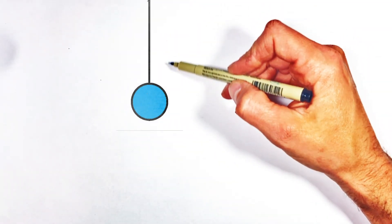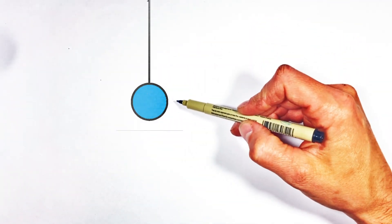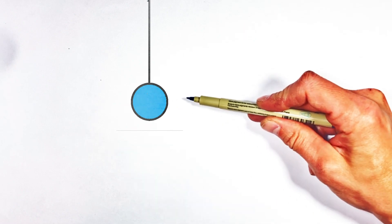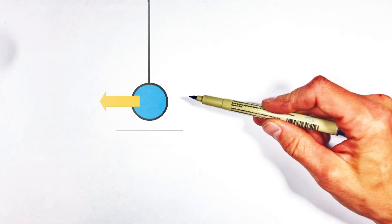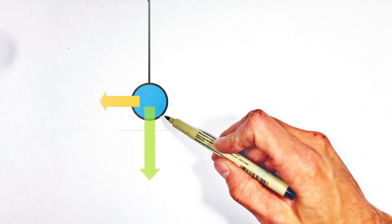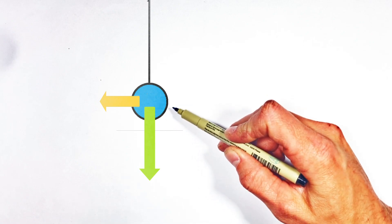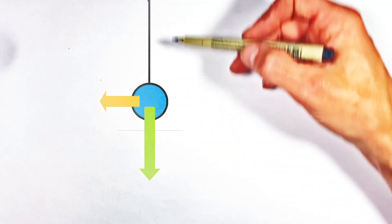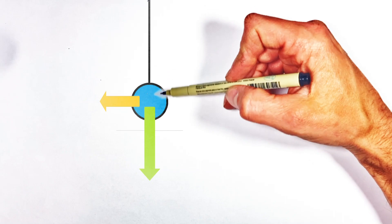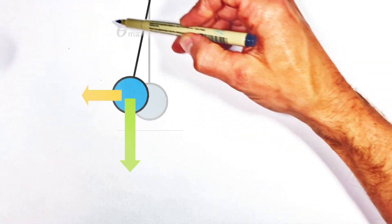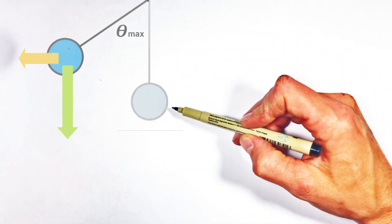So here we've got a pendulum which is initially hanging straight down at rest. We're going to push horizontally on this pendulum with a force that's equal to half the weight of the pendulum bob. The question we're going to solve for here is what is the maximum displacement from vertical that the pendulum is going to reach as it swings sideways?